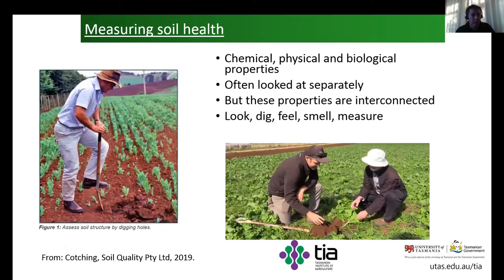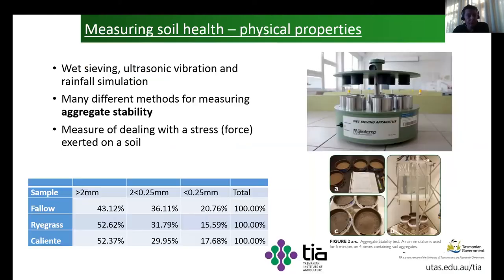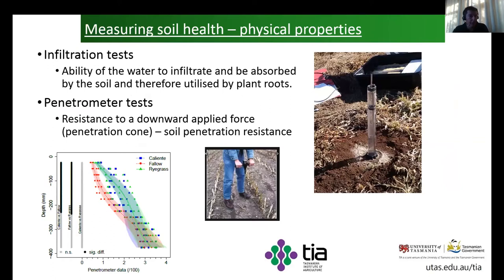Finally, I want to talk about how we might measure soil health, as this is a research area in itself. Traditionally, a lot of farmers measure only chemical properties. But physical and biological properties are also highly important. A traditional chemical test — which farmers use to decide what fertilisers to apply — does contain surrogate measures of soil health, such as carbon levels. Physical measures include aggregate stabilities, which give an idea of the soil's ability to cope with stresses like rainfall or wind erosion, as well as infiltration tests and penetrometer tests.